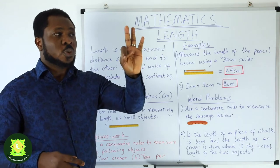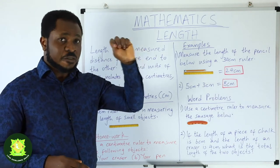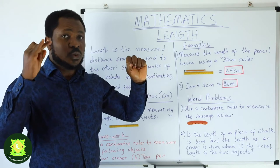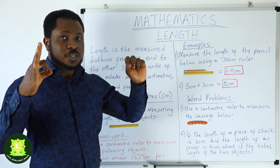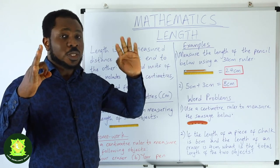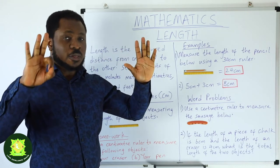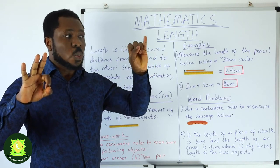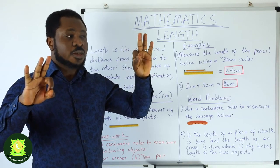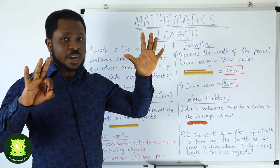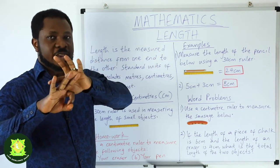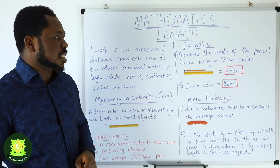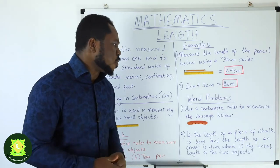We count 5 centimeters: 1, 2, 3, 4, 5. Then 3 centimeters: 1, 2, 3. So what is 5 centimeters plus 3 centimeters? Counting all together: 1, 2, 3, 4, 5, 6, 7, 8. The answer is 8 centimeters. If you got that, well done.